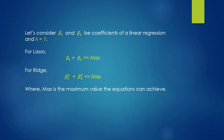Consider two coefficients beta 1 and beta 2 of a linear regression, with lambda equal to 1. The equation for lasso regression would be: beta 1 plus beta 2 less than or equal to max, which is the sum of the coefficients. For ridge regression it would be: beta 1 squared plus beta 2 squared less than or equal to max, which is the sum of the squares of the coefficients. Here, max is the maximum value that the equations can actually achieve.